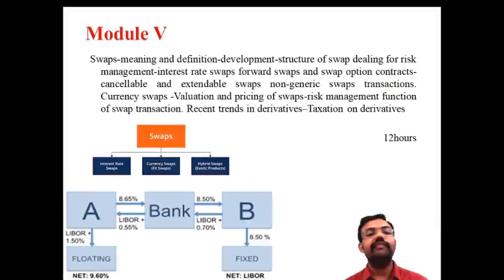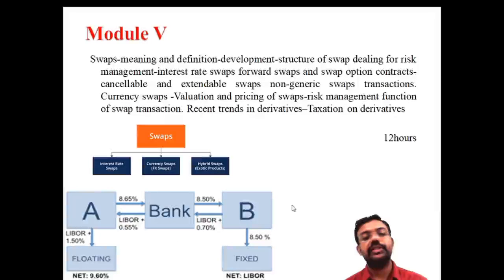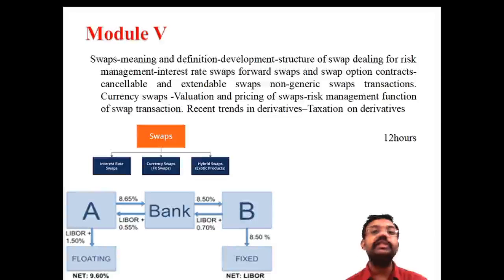Finally, the fifth and last module is the swap — exchanging cash inflows between two parties. Different categories include interest rate, currency, and hybrid swaps. We discuss how swaps work: one person is the buyer, another is the seller, and through an intermediary they perform swap transactions. The last module is allocated 12 hours.